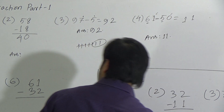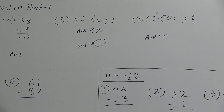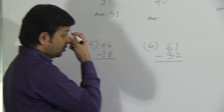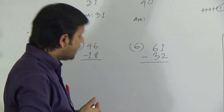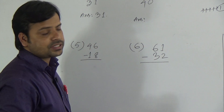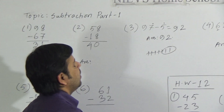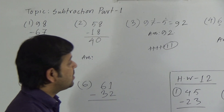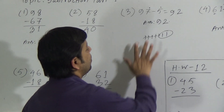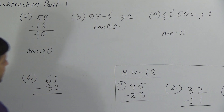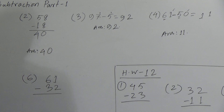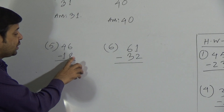Before going to the next question, I want to explain: the first two subtractions had numbers written one below the other — that type is called vertical subtraction. The next two had numbers written side by side — that type is called horizontal subtraction. Also, in all four questions so far, each digit of the second number was smaller than or equal to the corresponding digit of the first number. But in questions 5 and 6, the digit we need to subtract is greater than the digit above it.